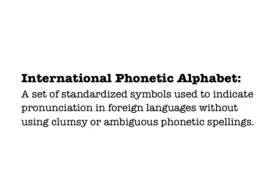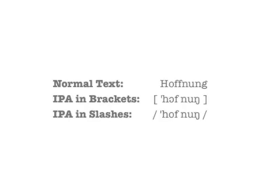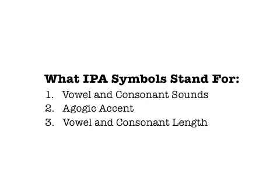Since we as singers usually only use the IPA for a pretty limited number of languages, it's easier for us to just learn the conventions of those languages than to commit literally thousands of IPA symbols to memory. When you see the IPA written, it'll be in brackets or between two slashes as I'm showing on the screen here. We do this to distinguish the IPA from regular text because a lot of the IPA symbols are going to look like letters of the alphabet, but they aren't necessarily pronounced like the letters they look like.